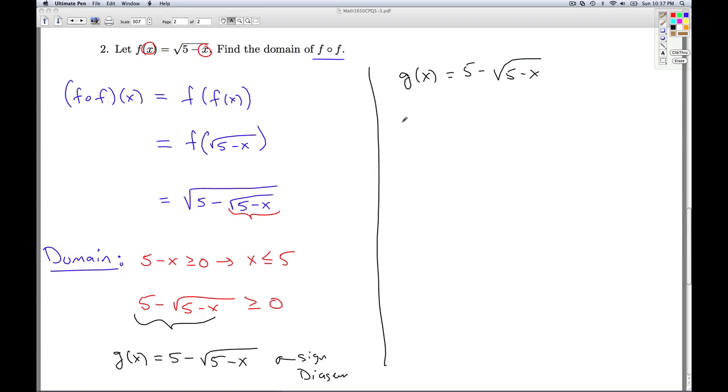When I make sign diagrams, the first thing we need to look out for is the domain. What's the domain of g going to be? Well, the domain of g, we need this 5 minus x to be greater than or equal to 0. We've already seen that means x has to be less than or equal to 5. That means when we go off and do our sign diagram, that's the portion of the real number line that we care about.